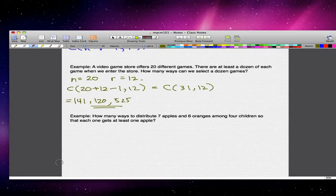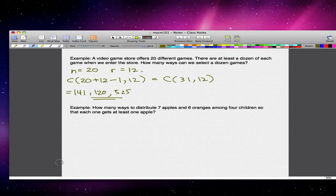Here's a trickier example. We want to distribute 7 apples and 6 oranges among 4 children such that each child gets at least one apple. Here's the tricky part: each child has to get at least one apple. So how do we go through this and find an answer to this?